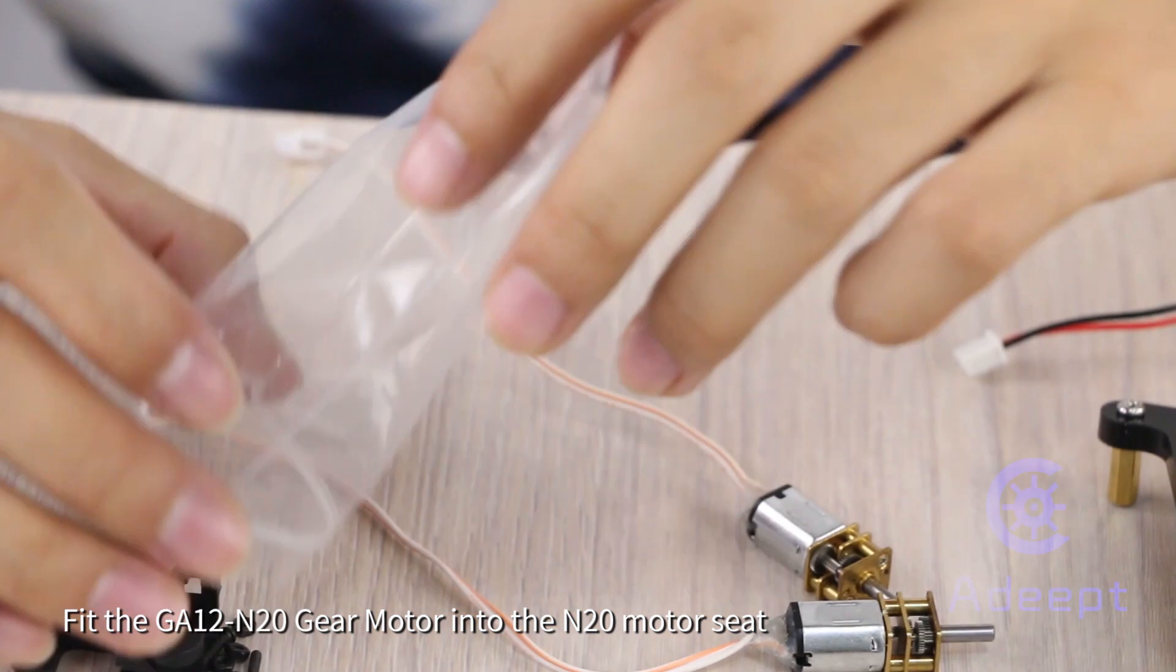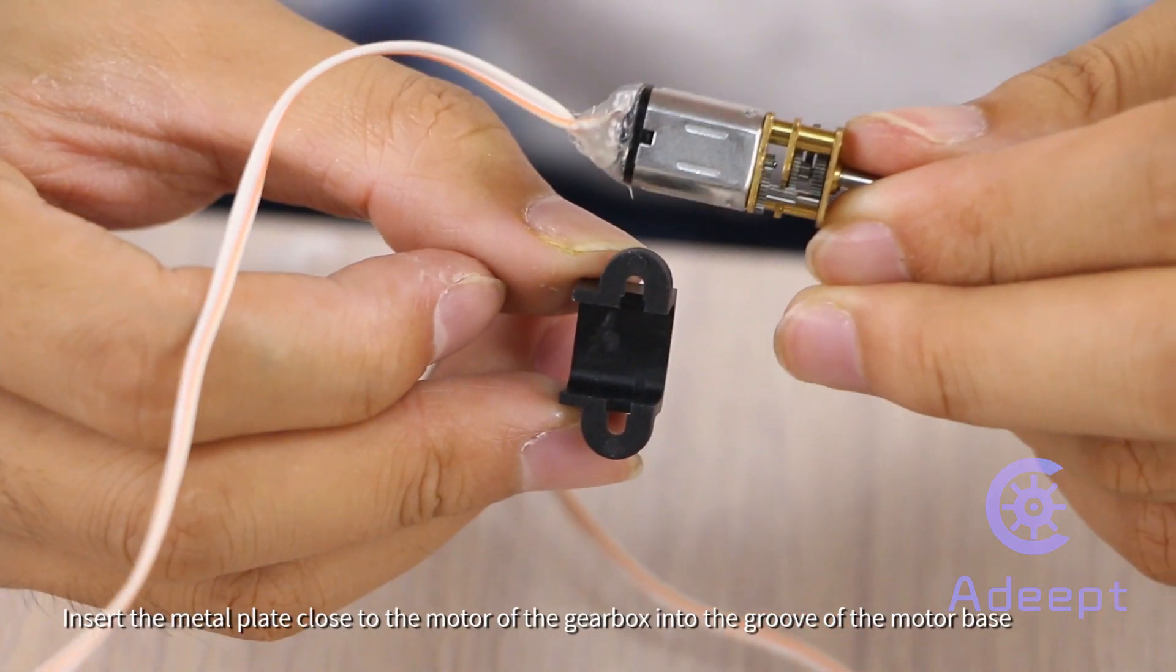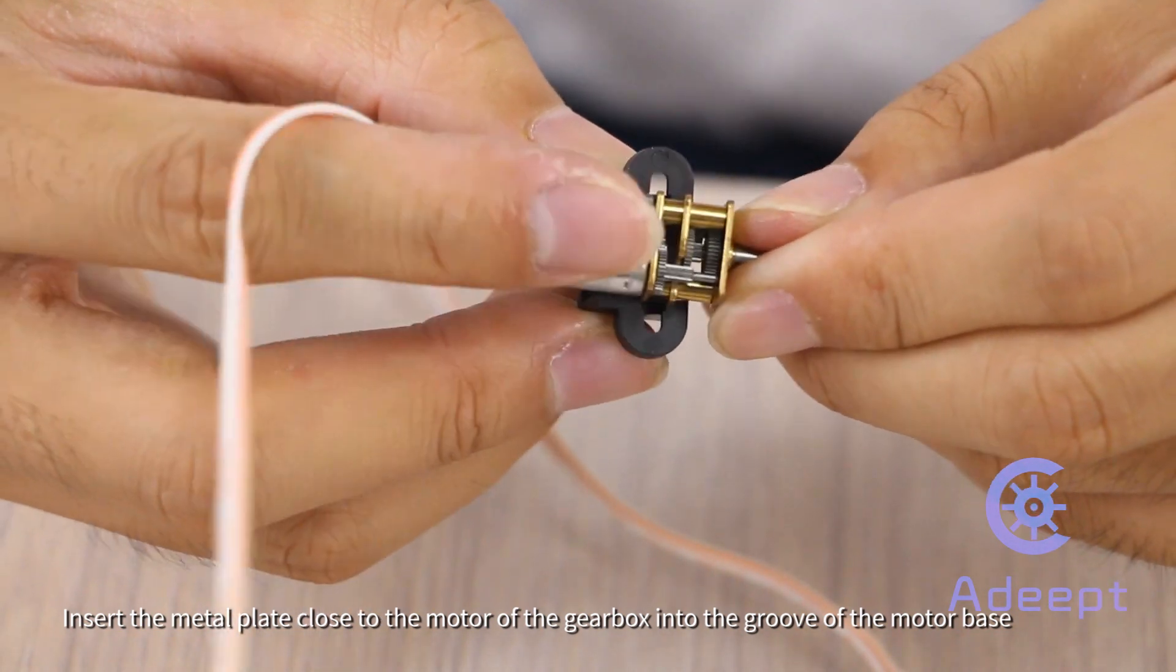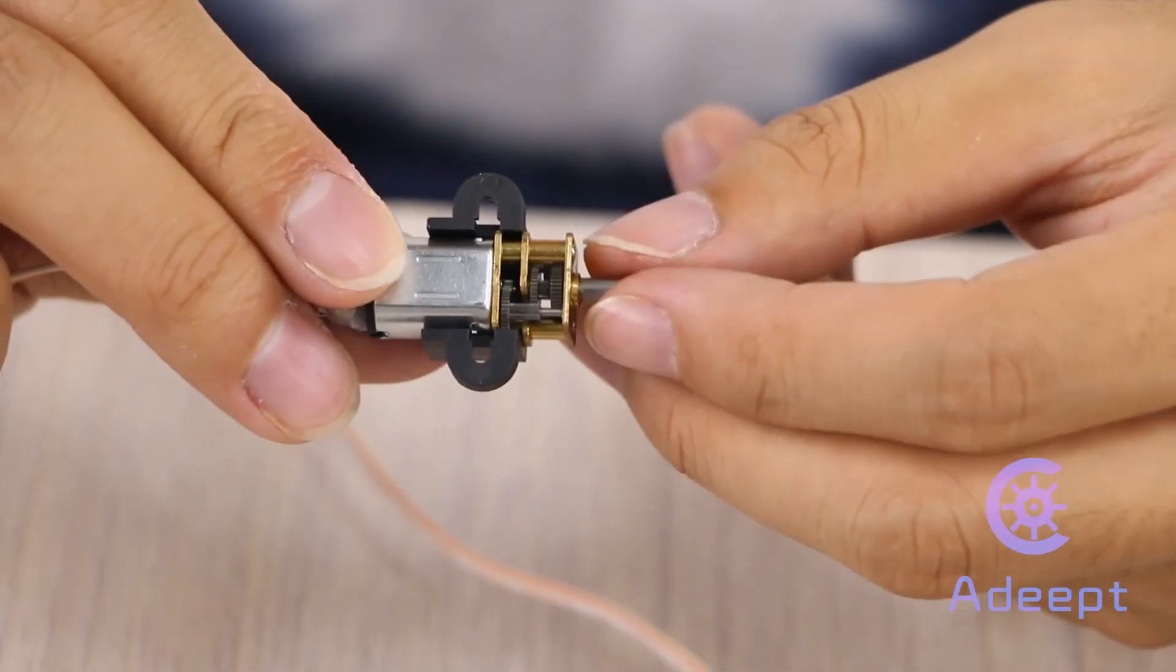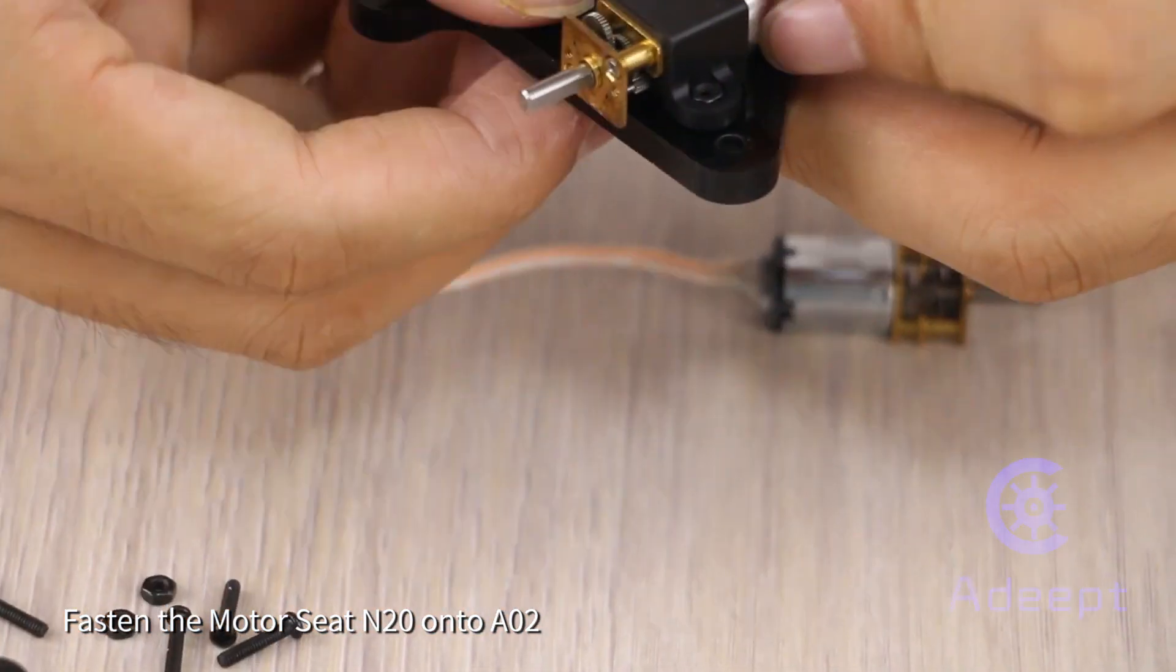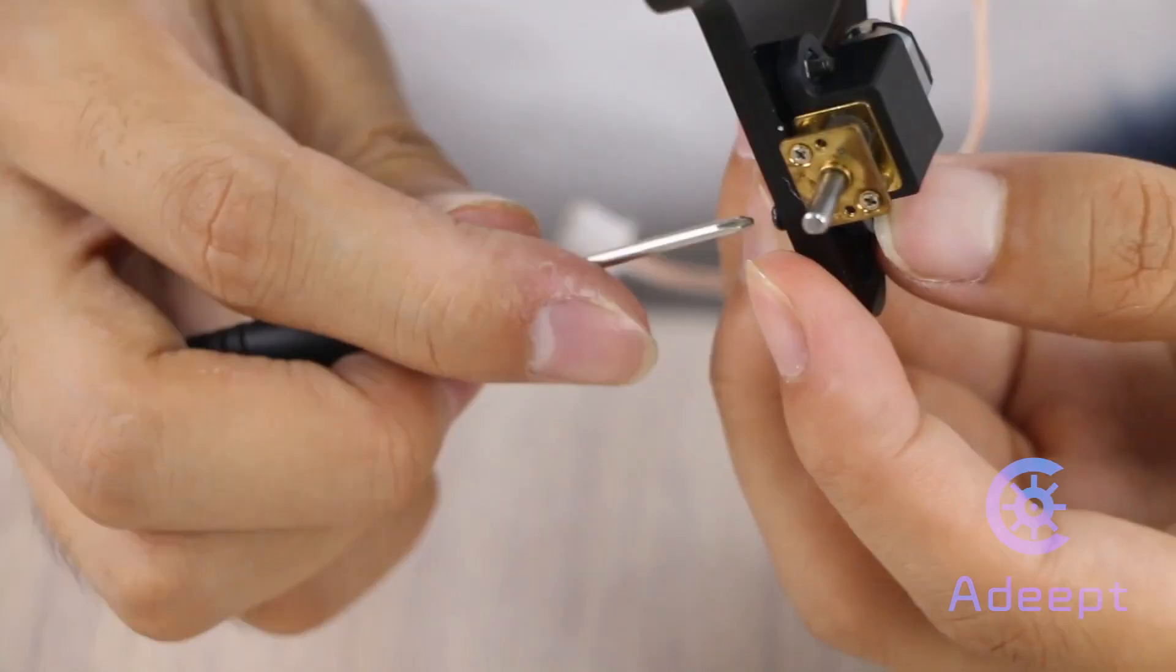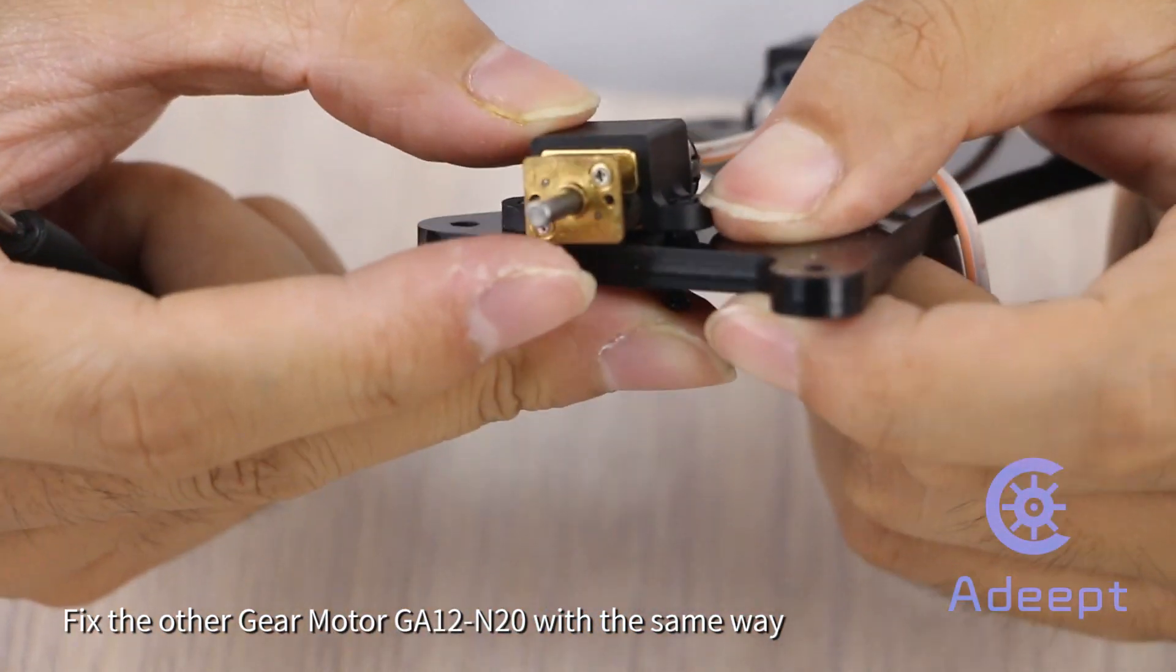Fit the GA12 N20 gear motor into the N20 motor seat. Insert the metal plate close to the motor of the gearbox into the groove of the motor seat. The metal plate with its concavity towards the outside orientation. Fasten the motor seat N20 onto A02. Fix the other gear motor with the same way.